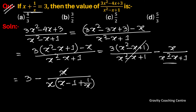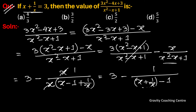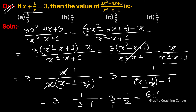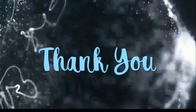Dividing numerator and denominator of the second term by x gives 3 - 1/(x - 1 + 1/x). Since x + 1/x = 3, this becomes 3 - 1/(3 - 1) = 3 - 1/2 = 5/2.